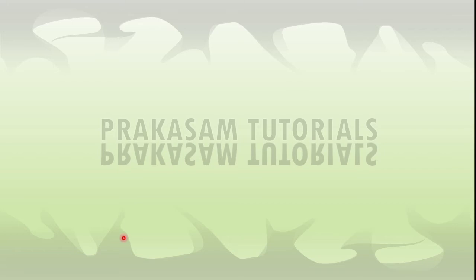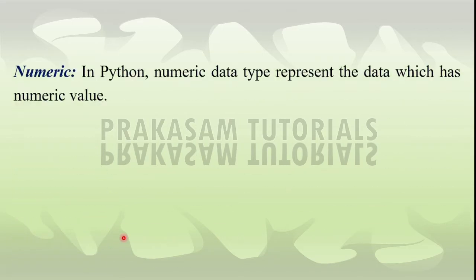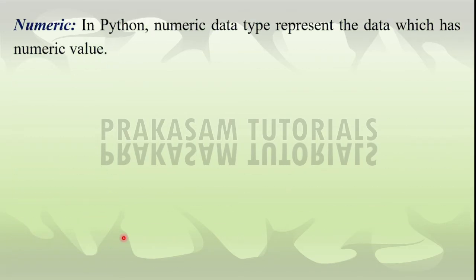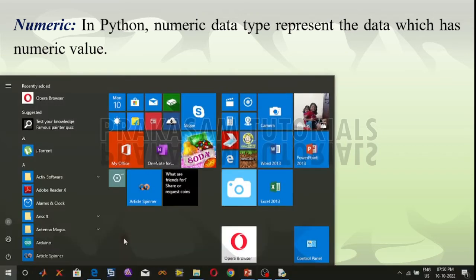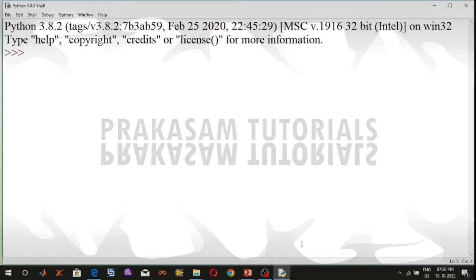Now I am going to discuss separately about numeric data type, sequence data type, dictionary data type, boolean data type, and set data type. In Python, the numeric data type represents data which has a numeric value. Numeric value can be integer, floating number, or even complex numbers.